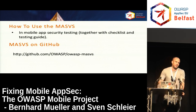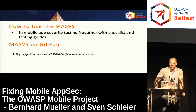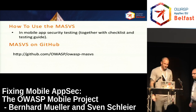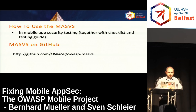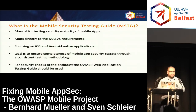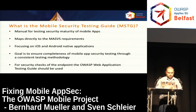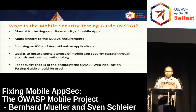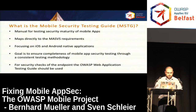Another way to use the MASVS together with the testing guide and checklist is in traditional mobile app penetration tests. So, what is the Mobile Security Testing Guide? It's not just a guide to spot the obvious mistakes — it's a comprehensive guide that should support a tester during the whole testing process. It maps directly to the MASVS requirements, and we are focusing for now on iOS and Android native applications. Hybrid applications or frameworks like Apache Cordova, Kony, or PhoneGap are not covered yet, but we'd be happy to get contributions in that area too.